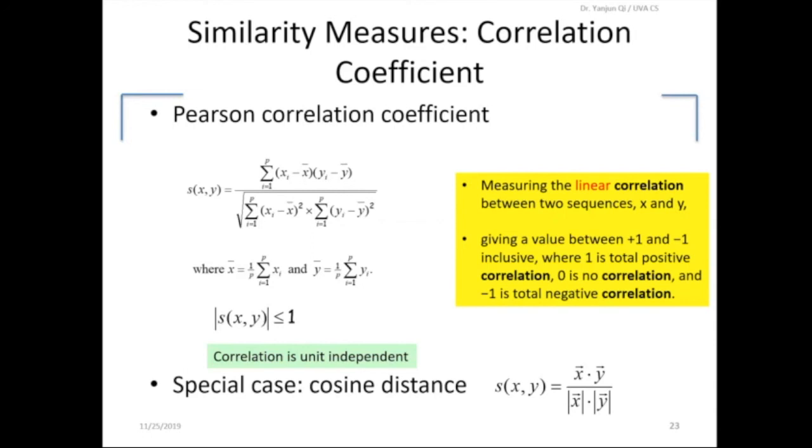And also the famous cosine distance is a special case of Pearson correlation. Cosine distance measure is really just the Pearson correlation on centered data. So there's no mean x-bar, y-bar. They are zero vectors. And this is in fact just a cosine distance.